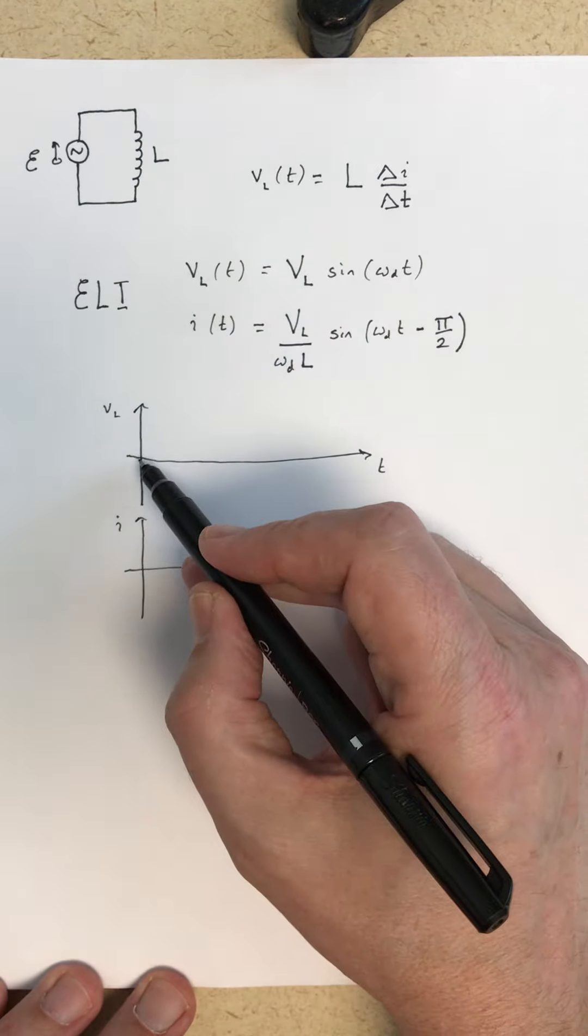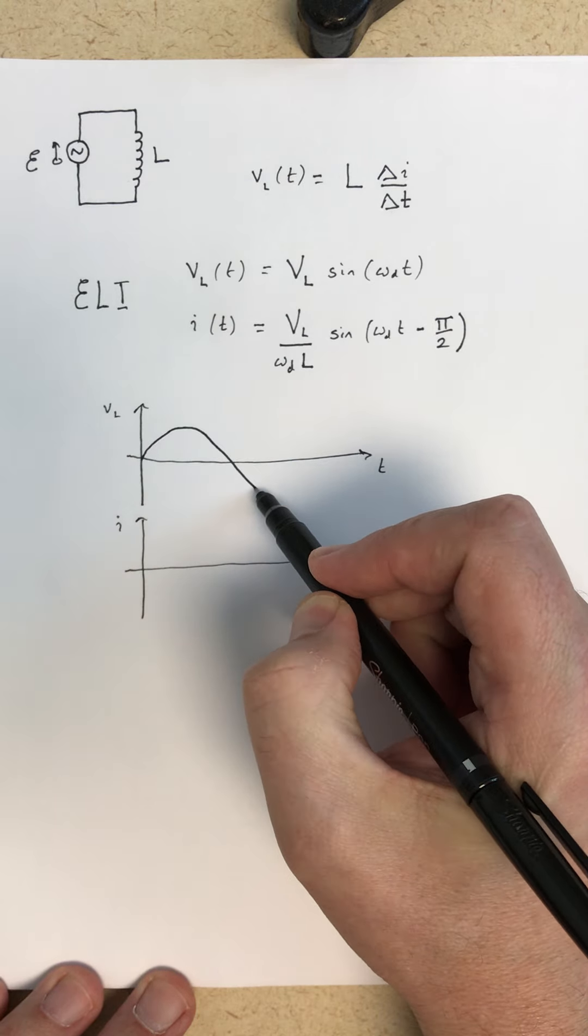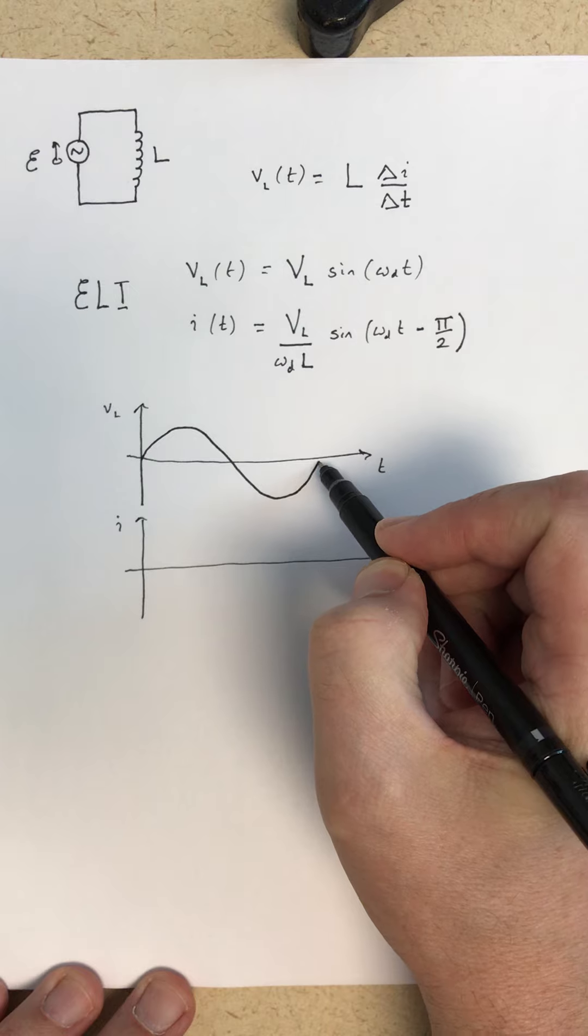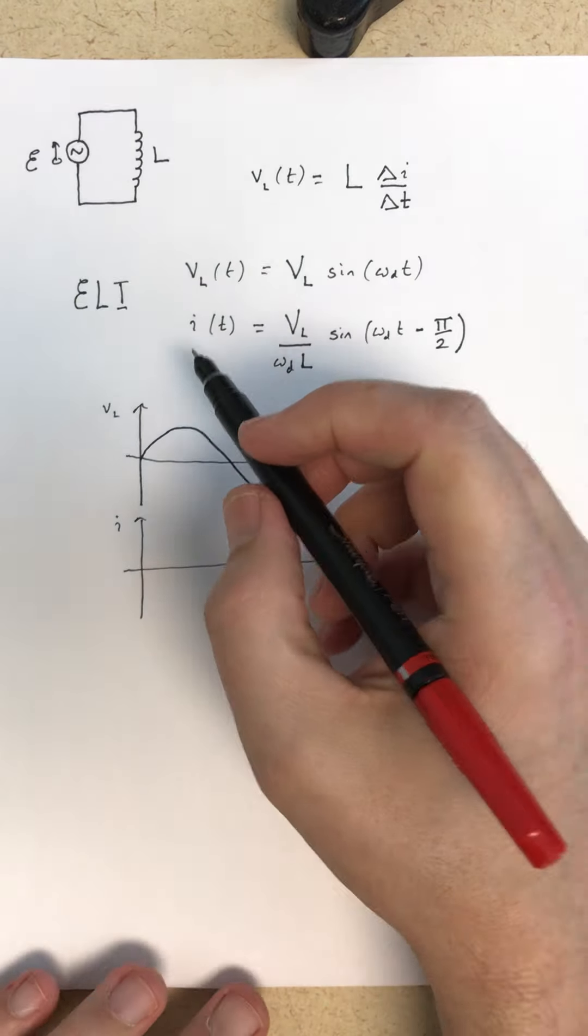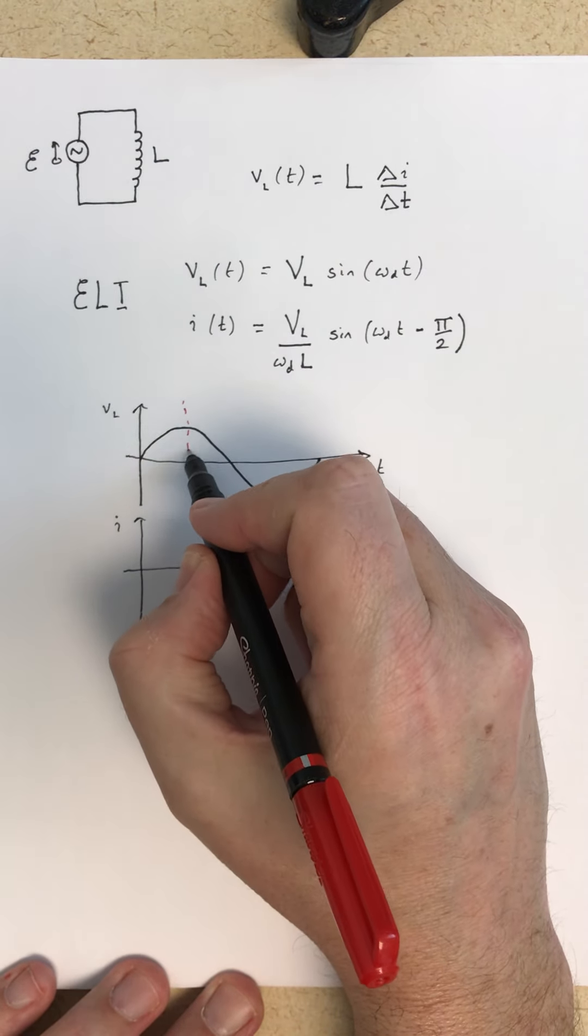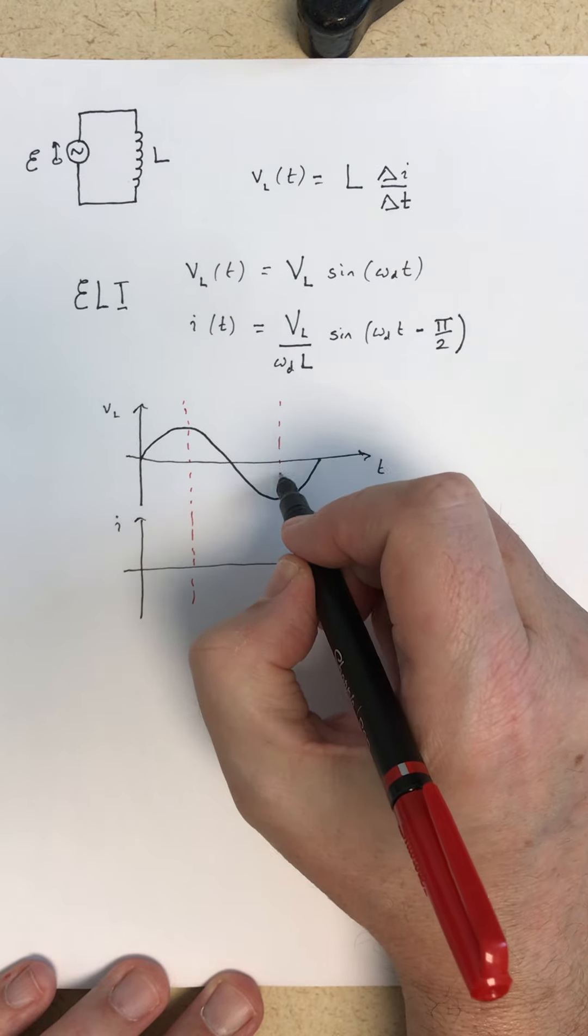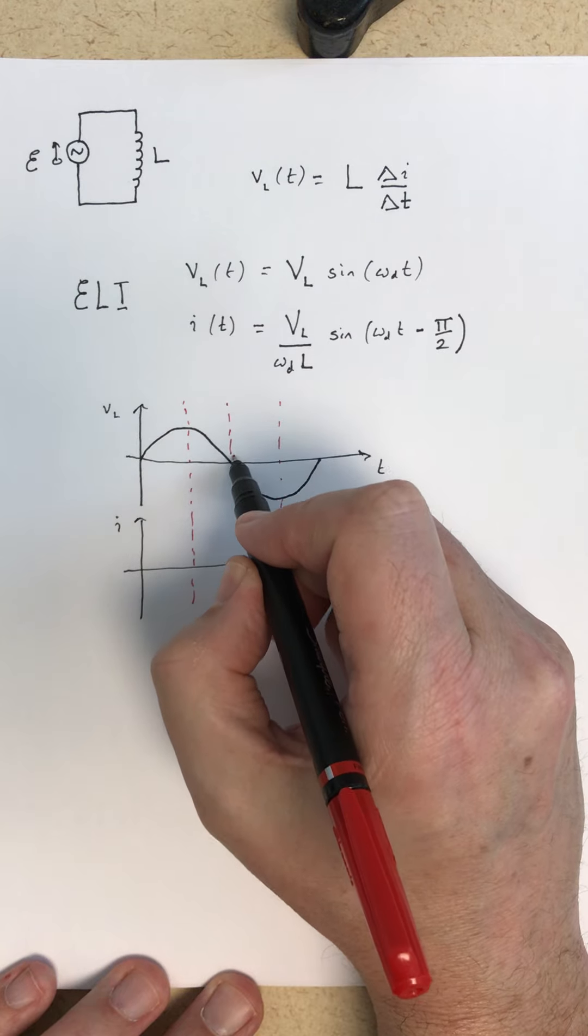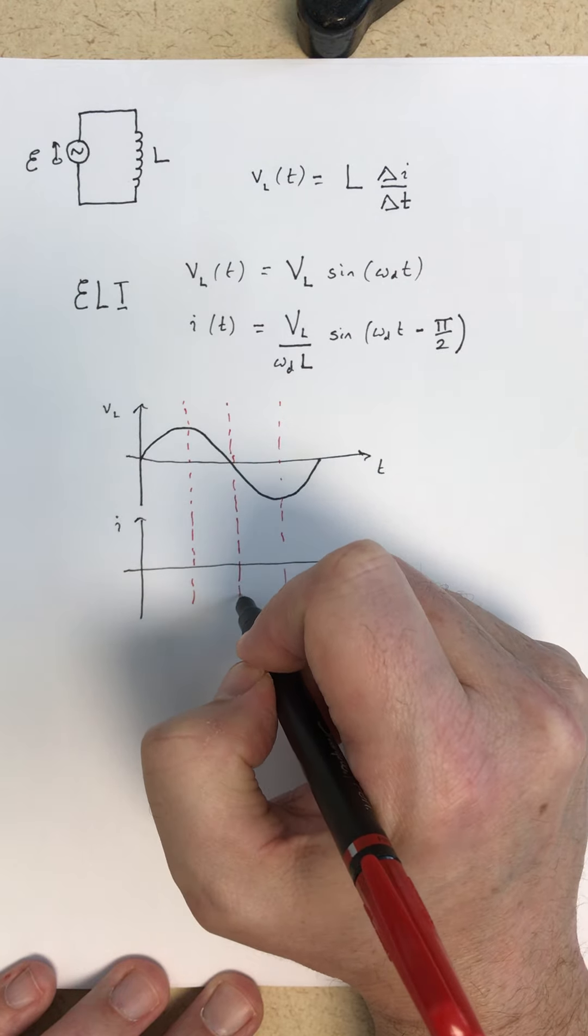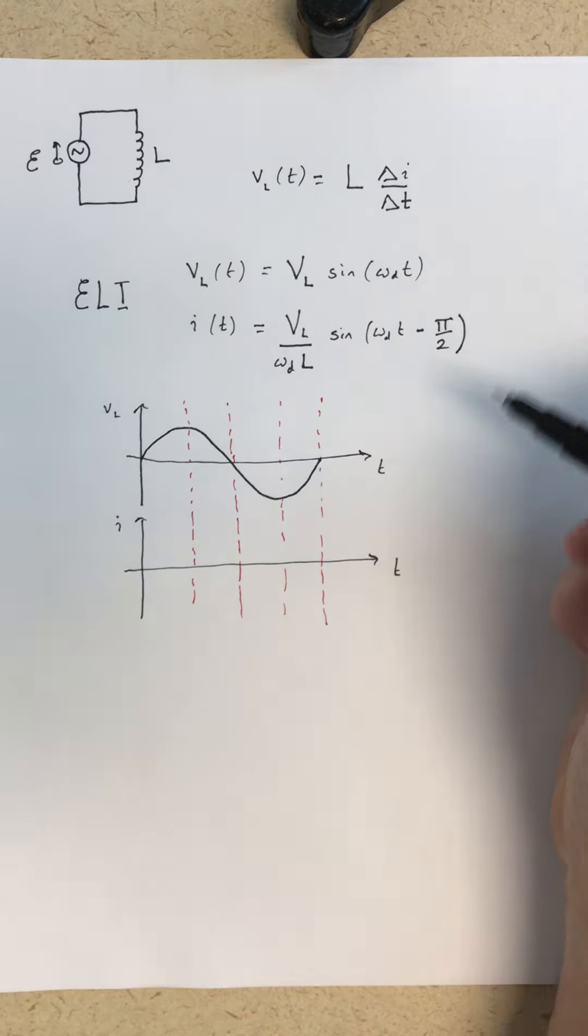The voltage is just a sine wave. So it looks like that over one period, and we'll highlight a few special points here: when the voltage is maximum, when the voltage is minimum, and when the voltage is going through zero, both with a negative slope and when it has a positive slope.